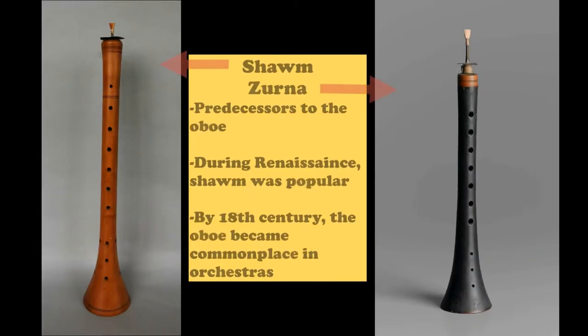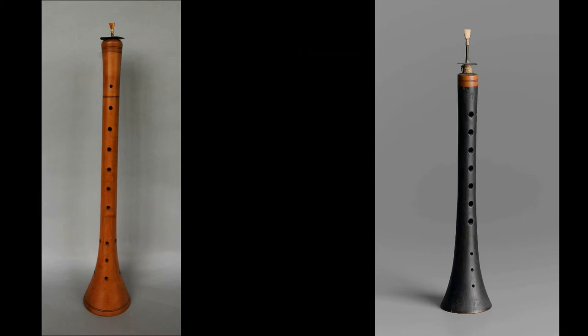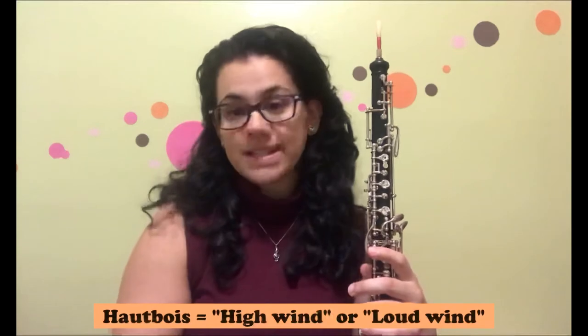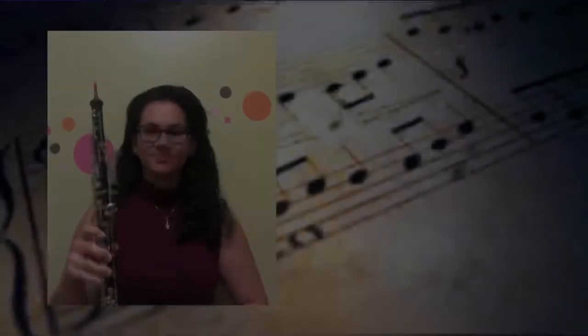The oboe actually was descended from the zirna and the shawm. During the Renaissance, the shawm was very popular, but by the 18th century, as the oboe became more refined, it became commonplace in orchestras. Its name derives from the French word hautbois, which translates to high wind or loud wind — which isn't surprising because it is used as the tuning instrument since the sound can pierce through other instruments.